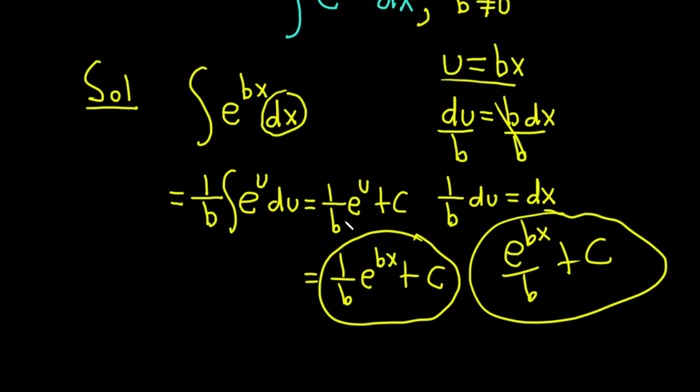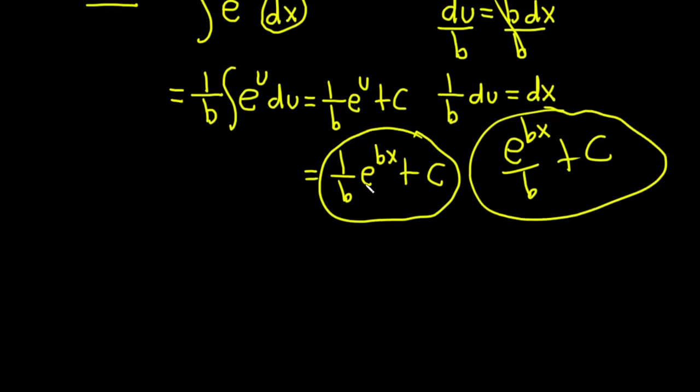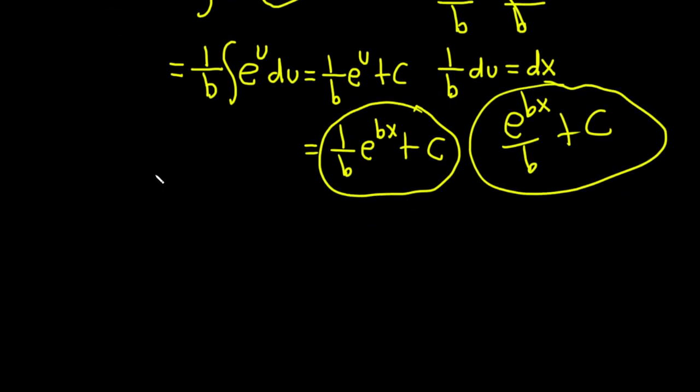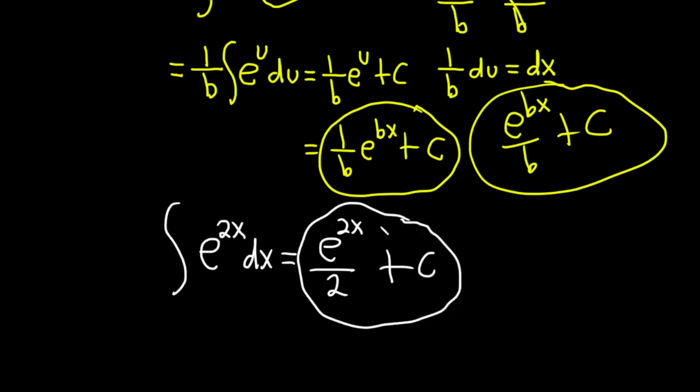And this is very useful. This is the formula that you should use all the time. So just really quickly, let me show you how powerful this is. Say you have e to the 2x dx. So when you look at this, you just say, oh okay, that's e to the 2x over 2 plus c. Boom. There's no need to make a substitution. That's just something that you know. And this is something worth memorizing.